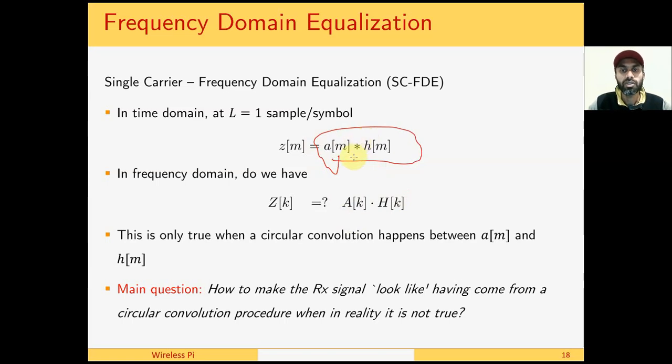We have discussed this concept in lecture 2 on systems. So the main question goes as follows: How to make the received signal look like having come from a circular convolution, although in reality it has come from a linear convolution procedure?